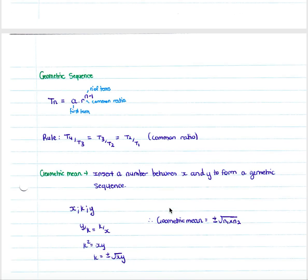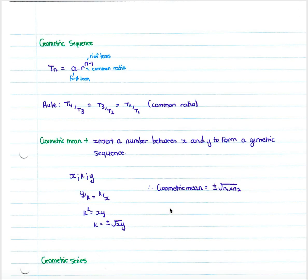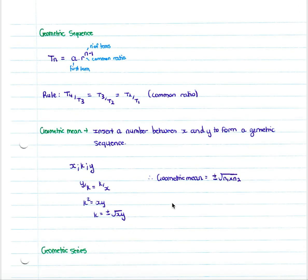We now move on to a geometric sequence, which is the second form of sequence you will study in mathematics. The general formula for a geometric sequence is: your term equals a — the first term — times r — your common ratio — to the power of n minus 1, where n is the term number.